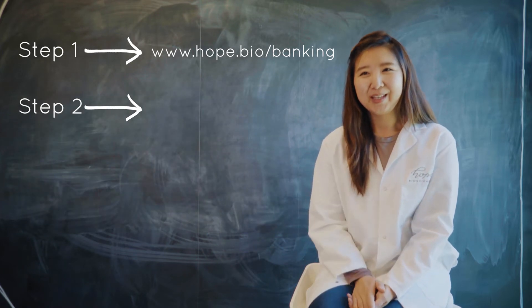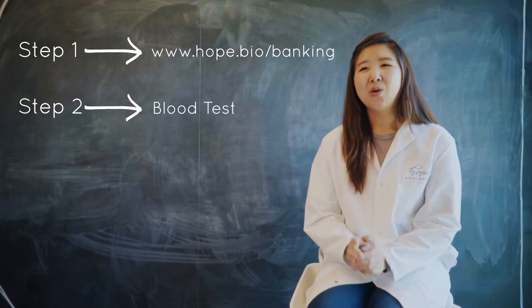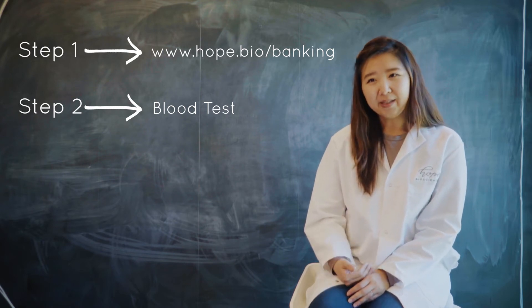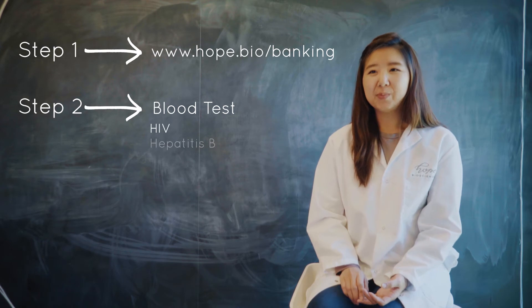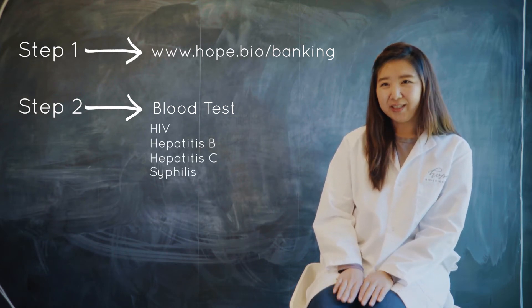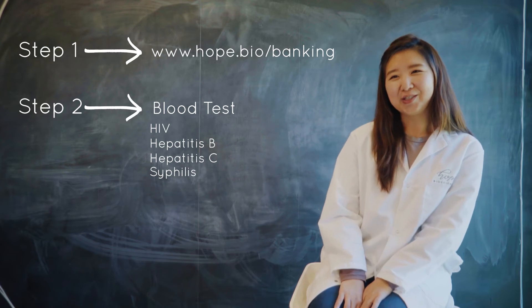Step number two, your blood tests. In order to qualify for stem cell banking with us, you must be negative for HIV, hepatitis B, hepatitis C, and syphilis. Once cleared, you will be scheduled for your fat extraction.